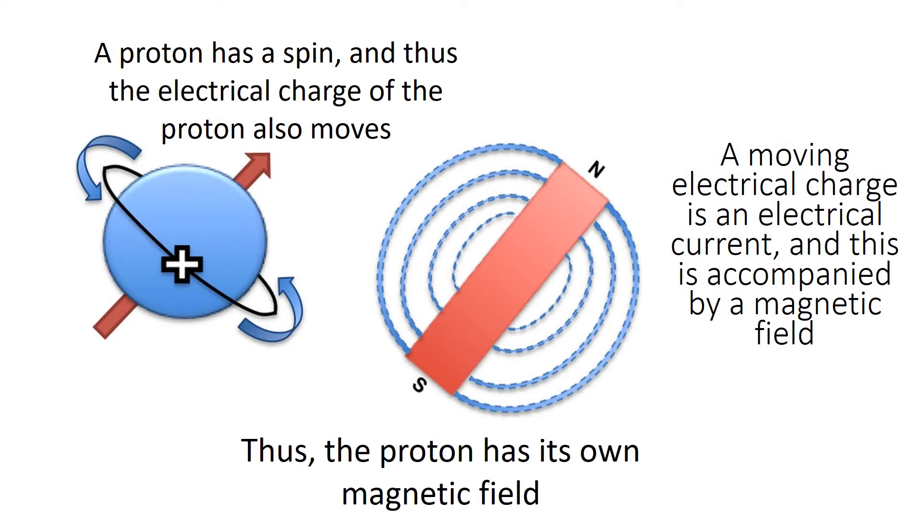A proton has a spin, and thus the electrical charge of the proton also moves. A moving electrical charge is an electrical current, and this is accompanied by a magnetic field. Thus, the proton has its own magnetic field.